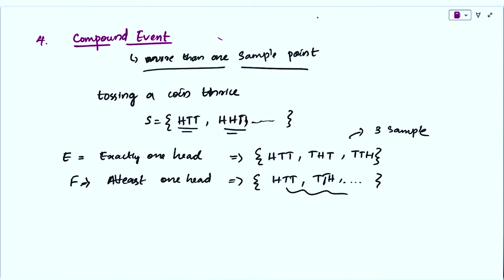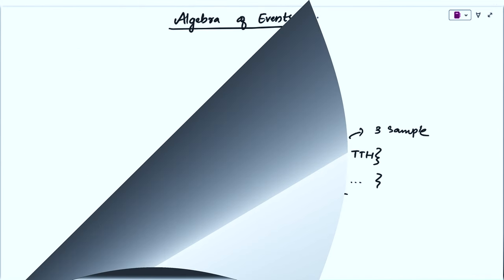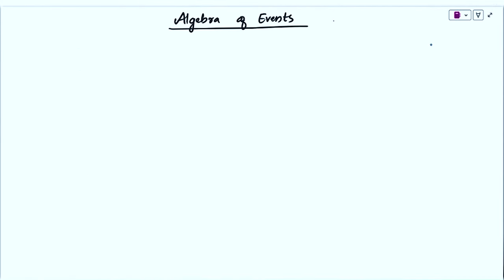So we have discussed the types of events. There are four types of events: the impossible event, sure event, simple event, and compound event. The next topic is about algebra of events. We already discussed events and the types of events earlier. Here, we are going to combine events using some notations, which are similar to the notations we used in the chapter of sets.